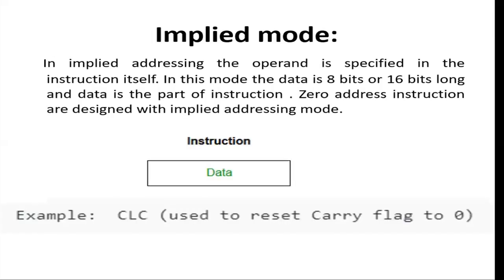Let's start with the first addressing mode: the implied mode. In this mode the operand is declared within the instruction itself. For example, the instruction CLC means 'clear carry flag.' Here we do not have any other operand apart from the instruction itself. So implied mode contains the operand within the instruction itself.